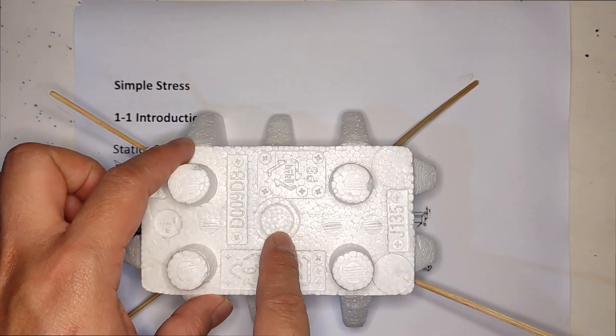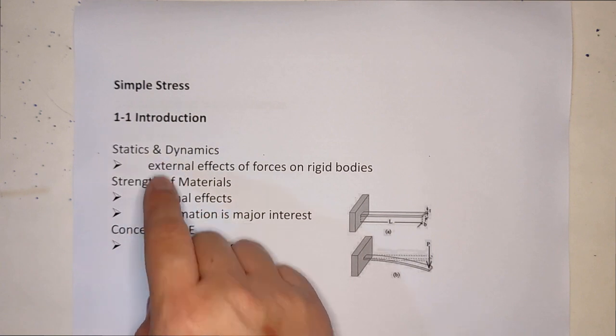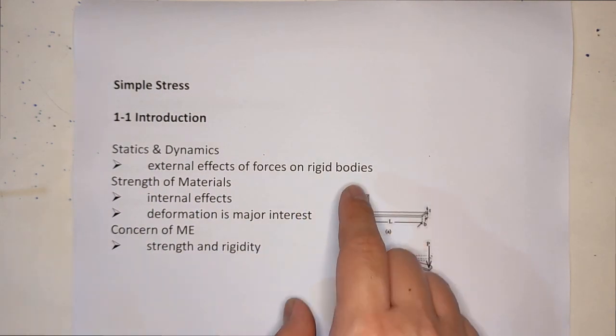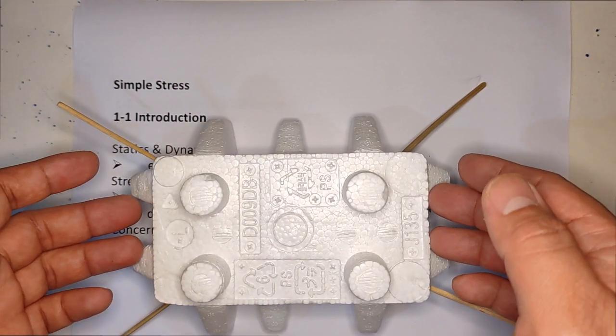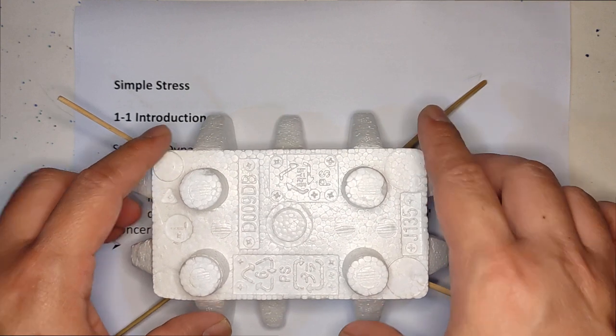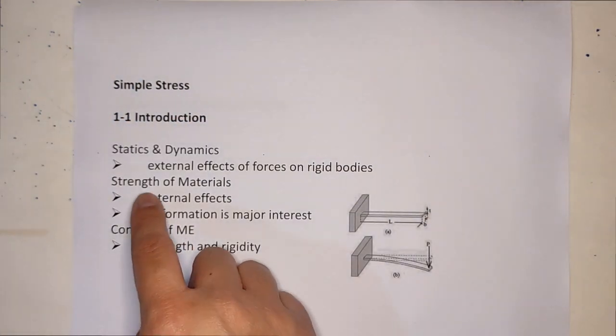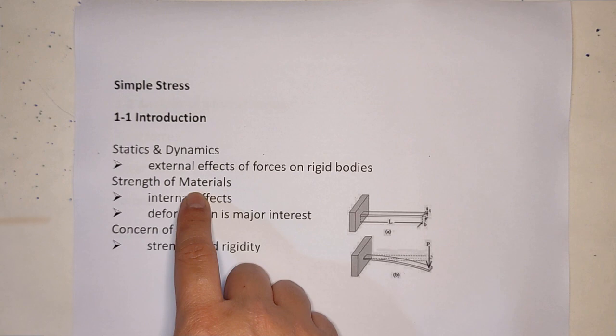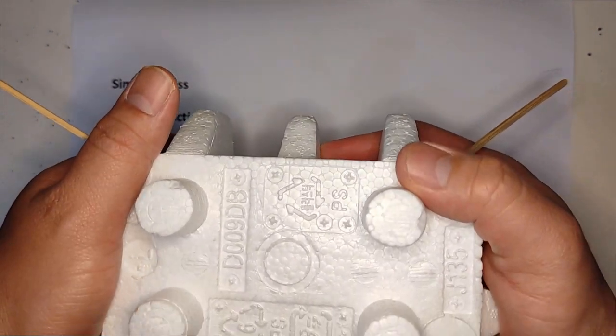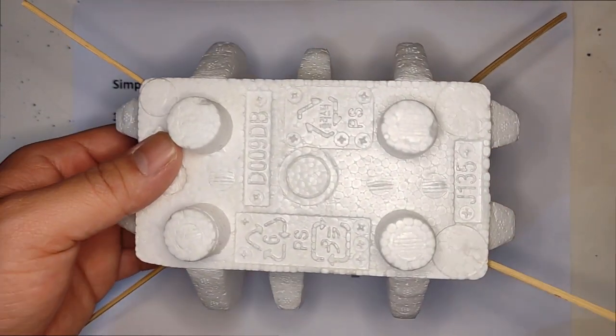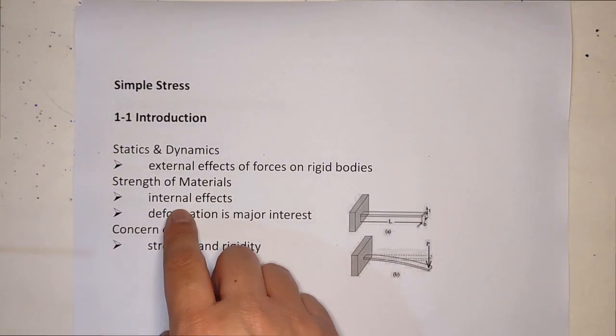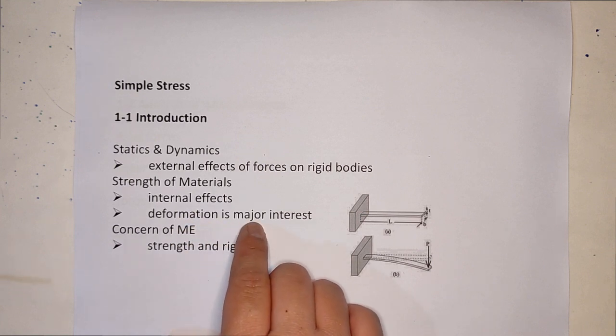That's the statics and dynamics. Now in strength of materials, rigid bodies means indestructible or negligible deformation. But in this case, that little bit deformation is very important for the strength. In strength of materials we are concerned about the internal effect. If you compress this member, it will be destroyed and that's your concern in strength of materials - the internal effect, deformation is major interest. That's why this subject is called deformable bodies.